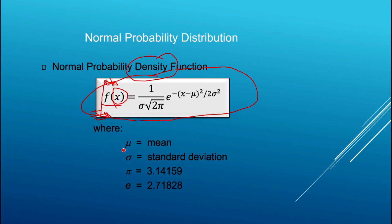Within this formula, mu stands for the population mean, and we have the standard deviation. We've got pi, which is equal to 3.14, and e, the natural base, which is equal to 2.718.